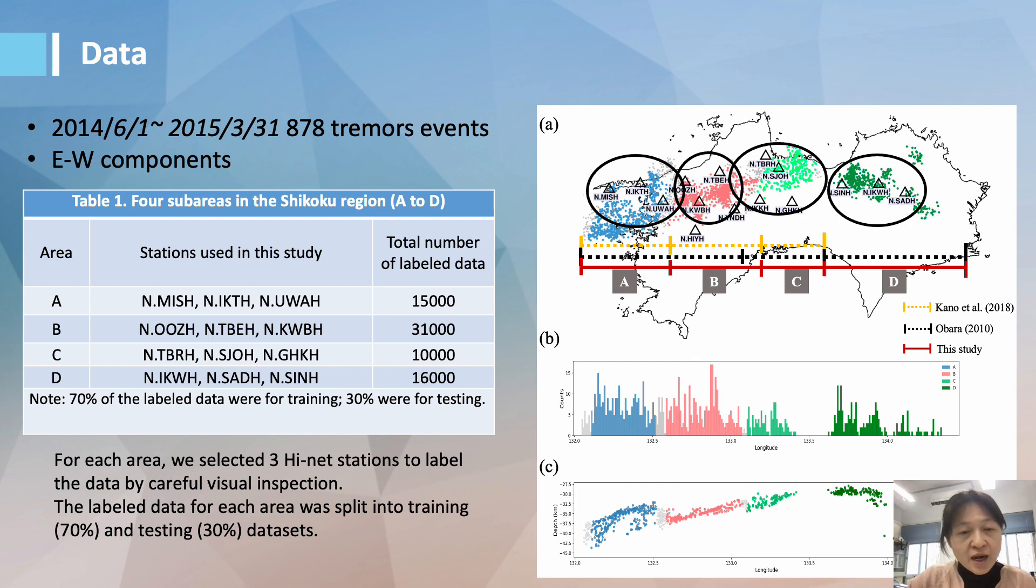And for each area, we selected three high net stations to collect the tremor training data, which is about 70% of the total, while the rest 30% are used for testing.